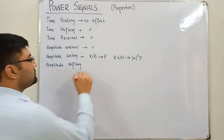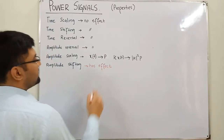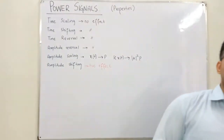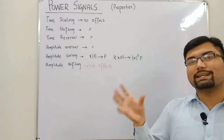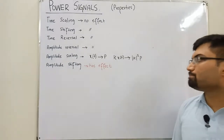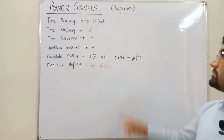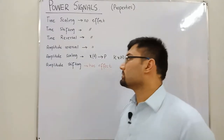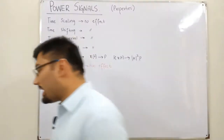Amplitude shifting has an effect on the power of a signal, but we cannot formalize it as we did for energy signals. We saw that amplitude shifting has an effect on energy as well, but we cannot conclude it into a particular formula — so that is the case here also. Amplitude shifting has an effect but we cannot generalize it.